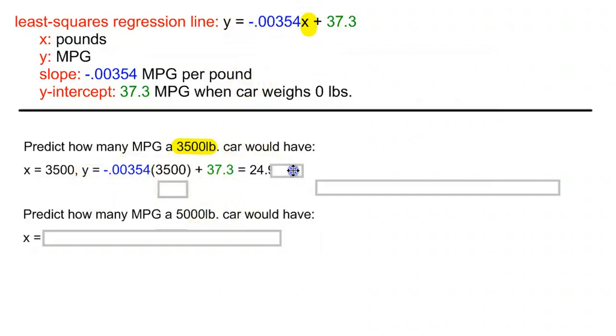And when you multiply it out, you end up getting 24.91. And what that's saying is, if you have a 3500 pound car, we would expect, on average, that the miles per gallon would be 24.91. So weight predicts our miles per gallon.